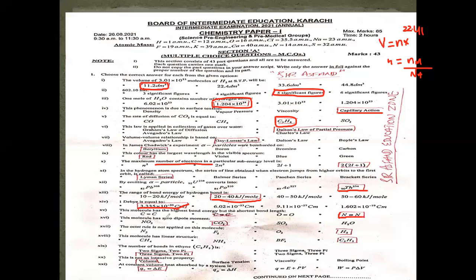This molecule has zero dipole moment — carbon dioxide. The octet rule is not applied on this molecule. Elements like hydrogen and helium normally do not follow the octet rule. The hydrogen option is given.